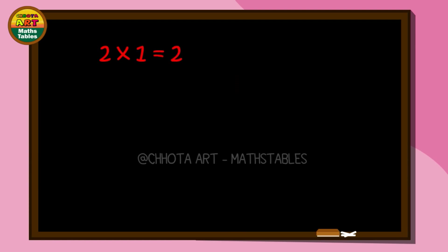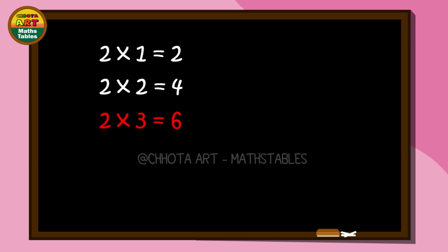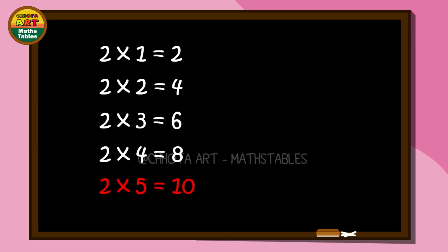Two ones are two. Two twos are four. Two threes are six. Two fours are eight. Two fives are ten.